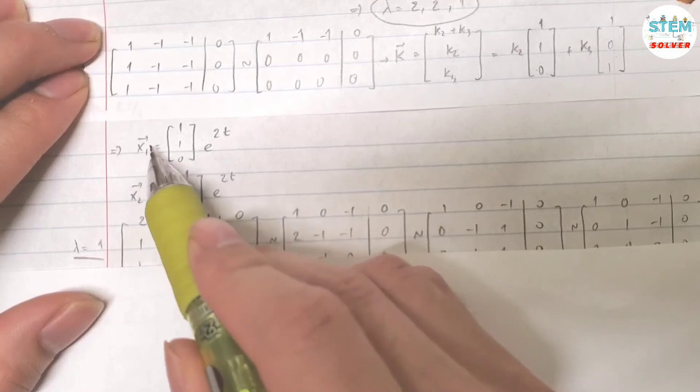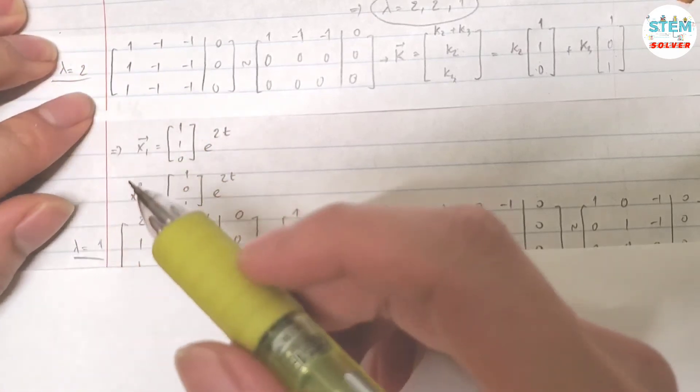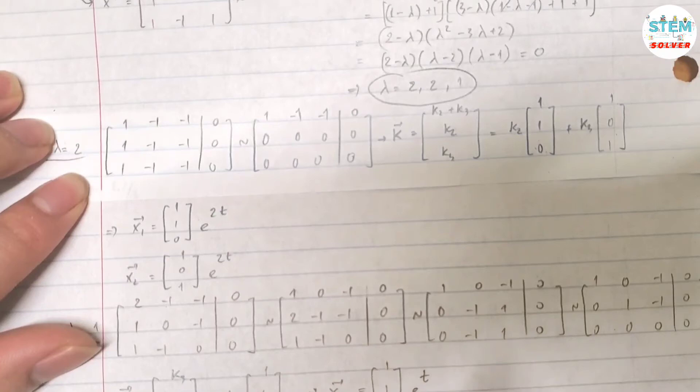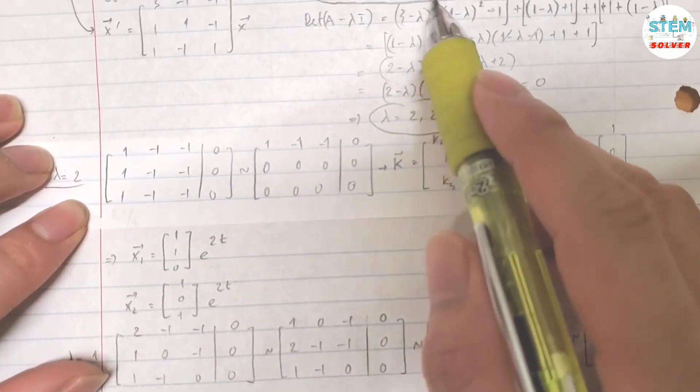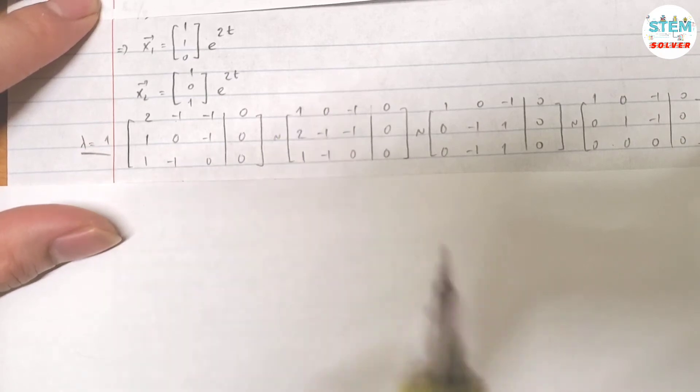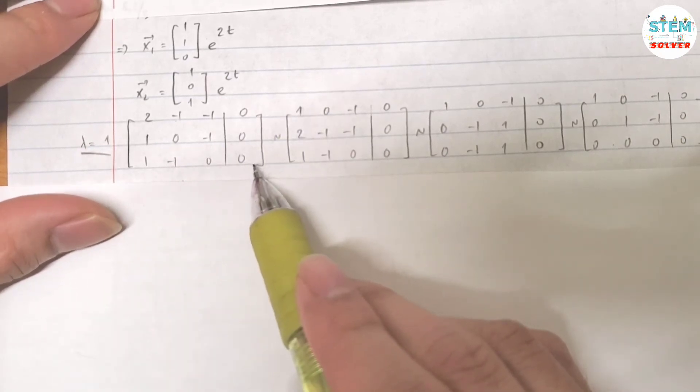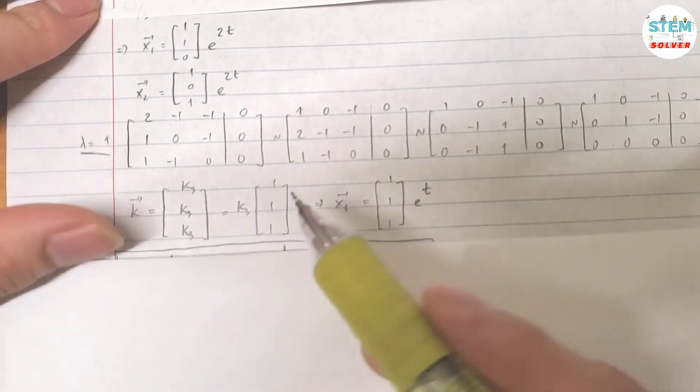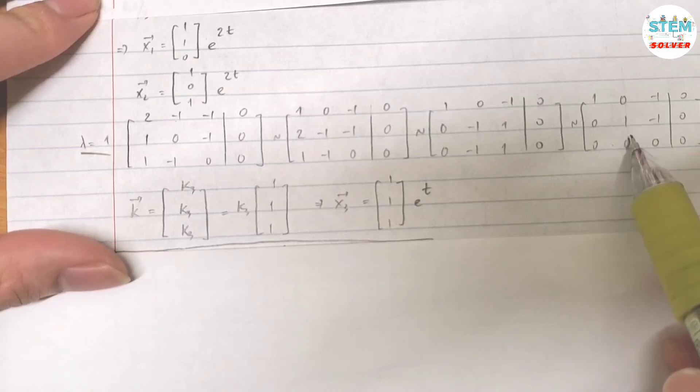So you have 2 linearly independent solutions for this lambda. Now you are going to do the same thing for lambda equals 1. Plug it into this matrix, and that gives you this matrix, and then augmented with 0. Reduce this down to base matrix, you will get this one.